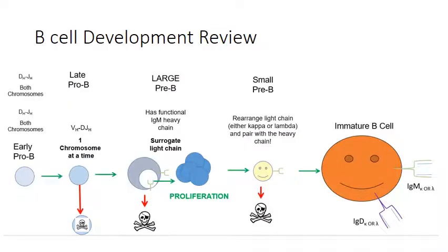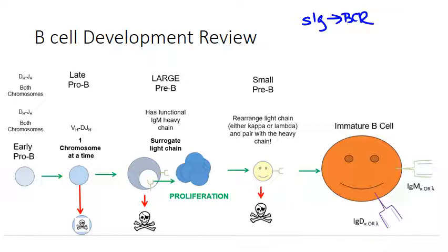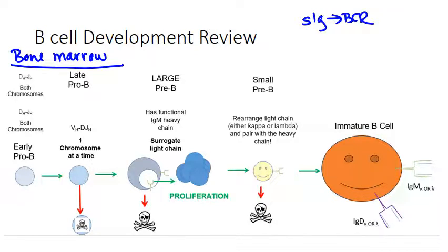Before we do that, let's talk a little bit about how B-cells develop, because all of these immunodeficiencies are basically a breakdown in this process at some point. B-cells are generally characterized by the presence of surface immunoglobulin, which acts as the B-cell receptor. Immature B-cells develop in the bone marrow out of the common lymphoid progenitor cell — the same progenitor used for T-cell development, except T-cells move into the thymus, whereas B-cells complete their development within the bone marrow.